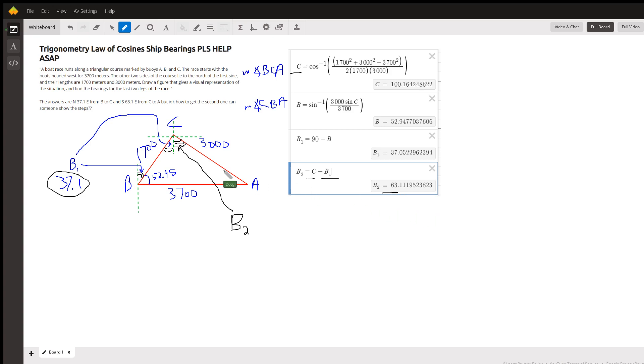So we can say that the bearing from C to A is south 63.1 degrees east.